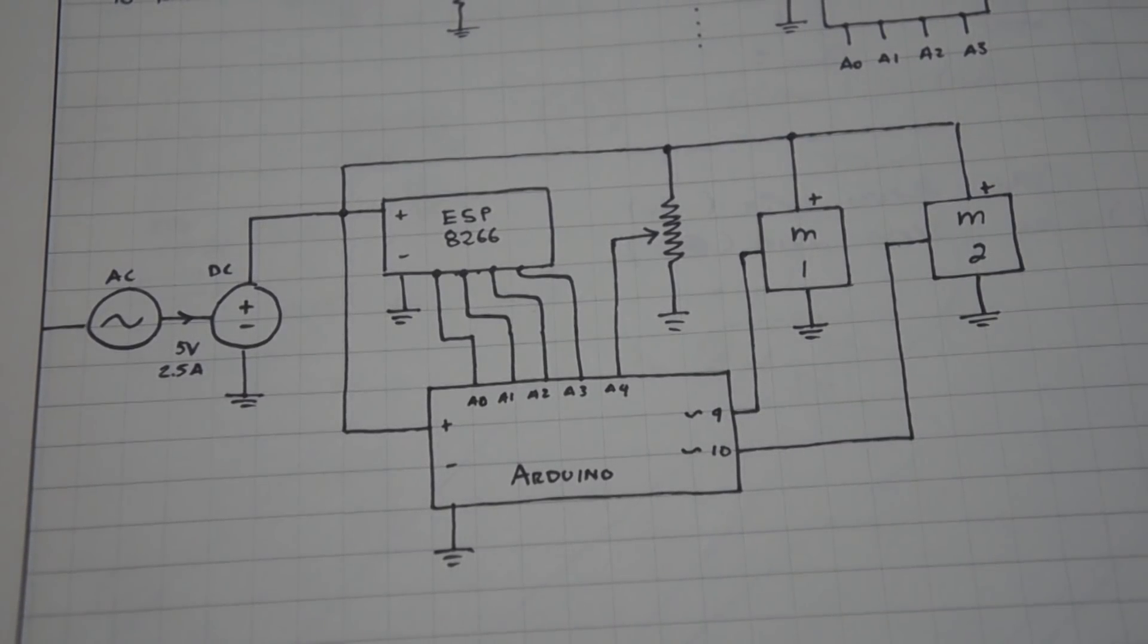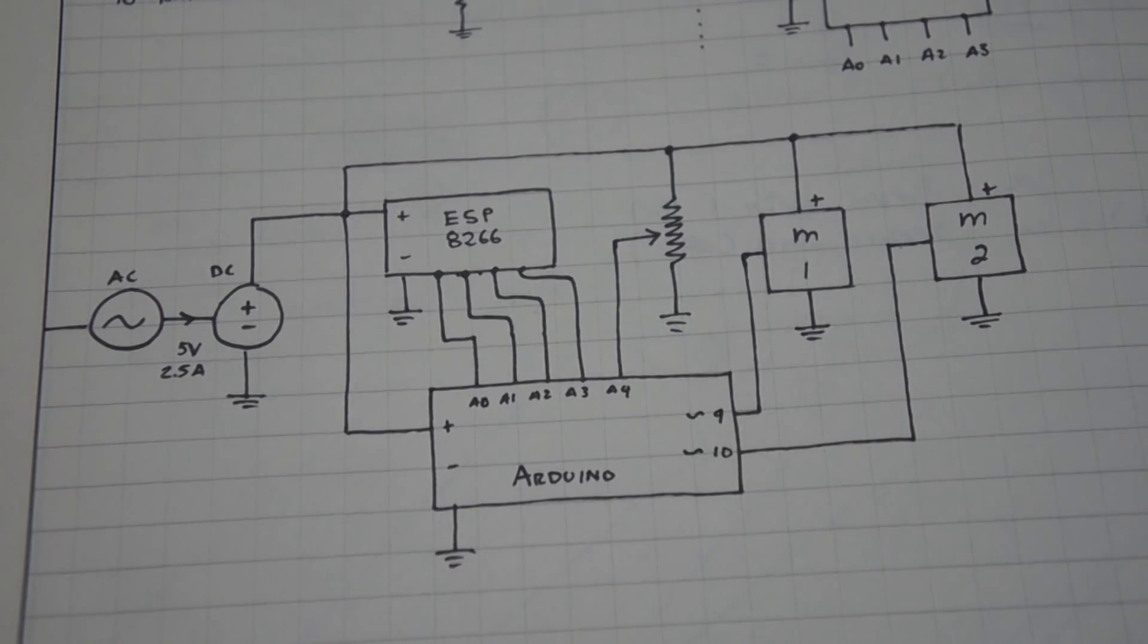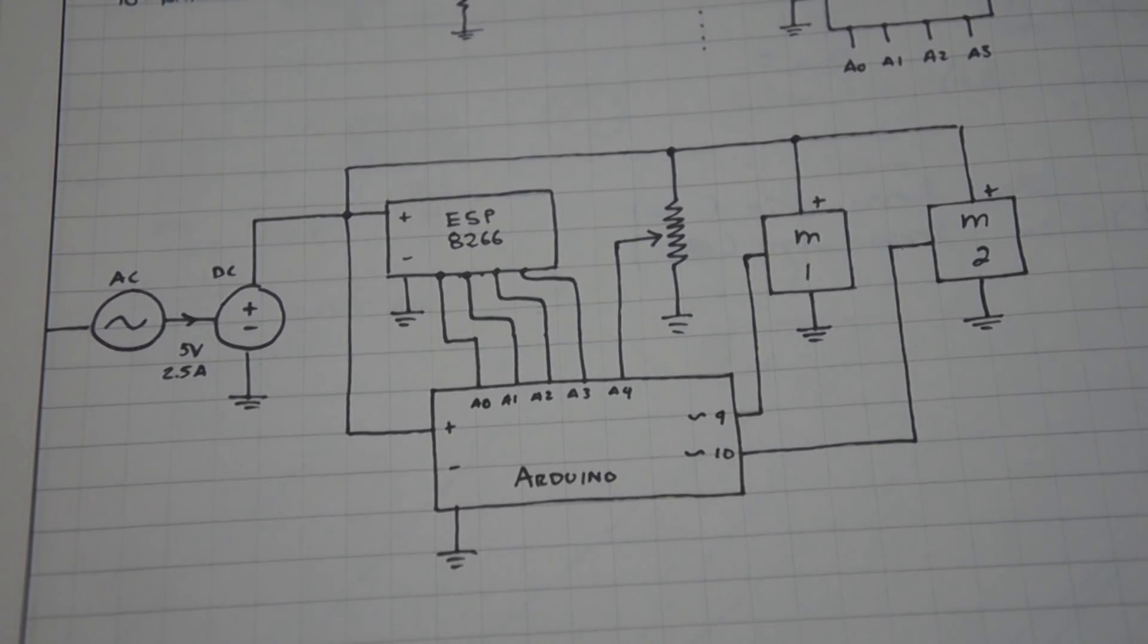I'm not running the motors directly from the Arduino because the Arduino can only output up to 500 milliamps, so that's not enough current for the motors to run. Therefore I'm going to hook it up directly to the power supply. Also, the Arduino is going to be receiving pulses from the ESP module to tell it what operations to do. Now the data lines from the servo motors are going to be hooked up to the Arduino pulse width modulation outputs to tell it what position to be in and what direction to turn.